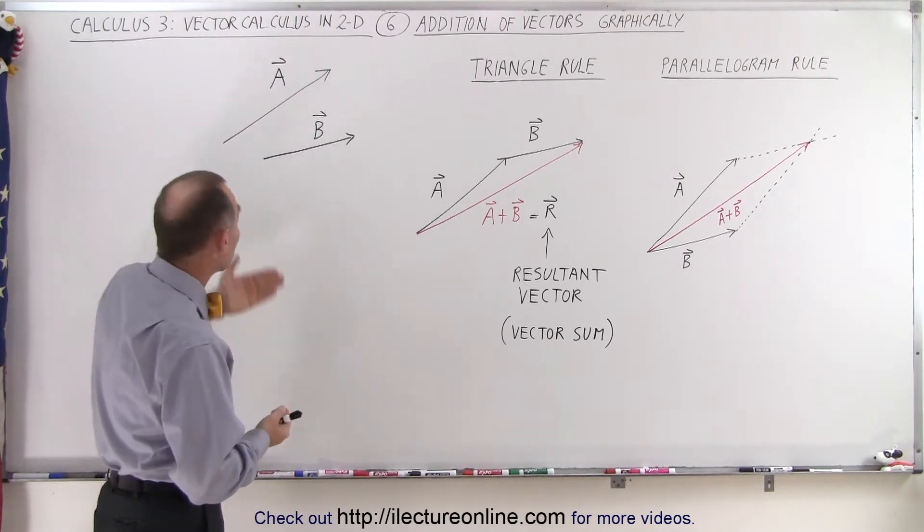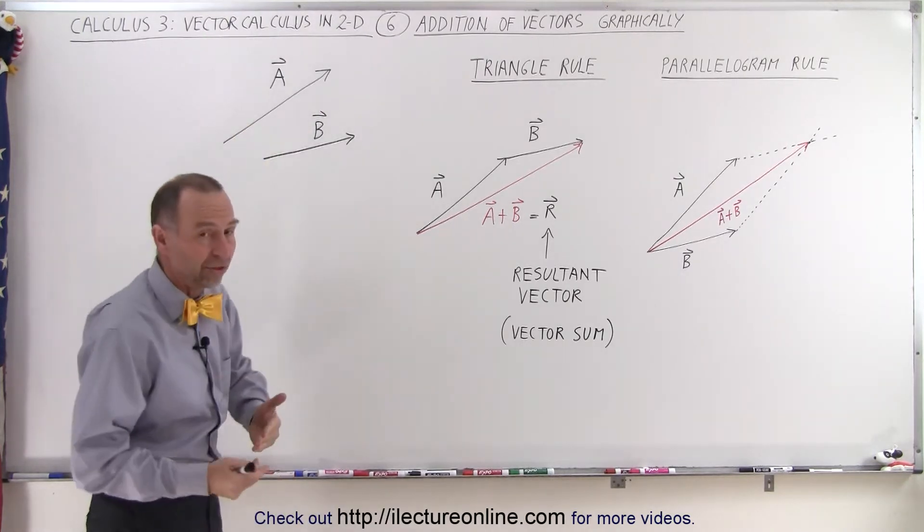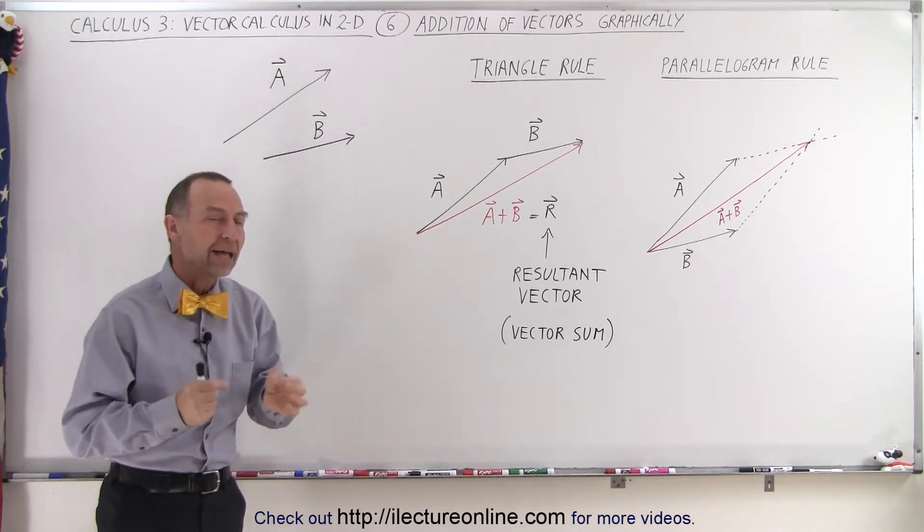Let's take two vectors. Here we have vector A and vector B. They're pointing in different directions and have different lengths. How do you add them together?